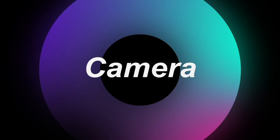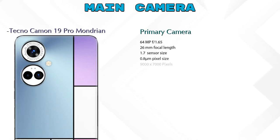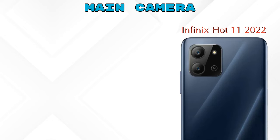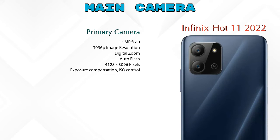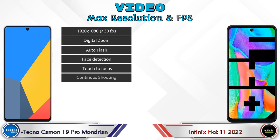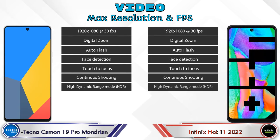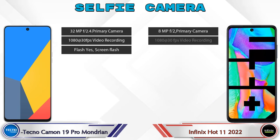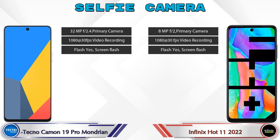Now let's see the detail about cameras. For the rear camera, the 19 Pro Mondrian has three cameras: a primary camera, an unknown camera, and a depth camera. The Hot 11 2022 has two cameras: a primary camera and a depth camera. For video, the 19 Pro Mondrian has 7 and the Hot 11 2022 has 8 different feature types available. Both phones have a single front selfie camera with three different features available.